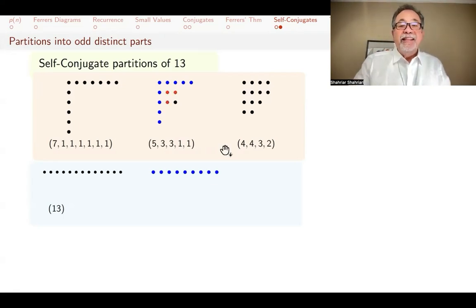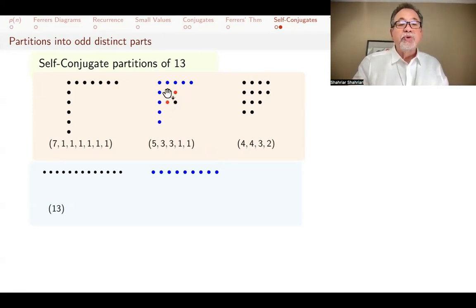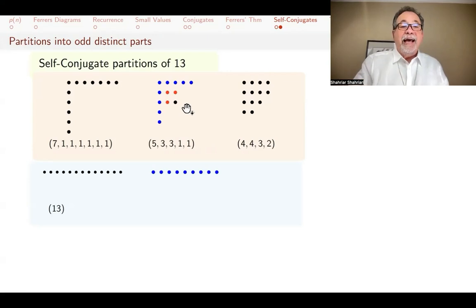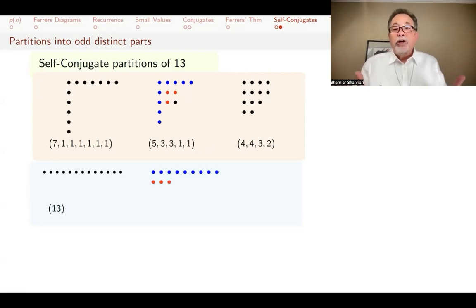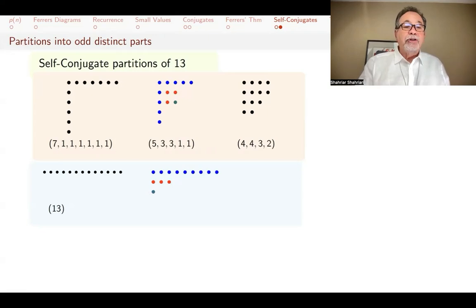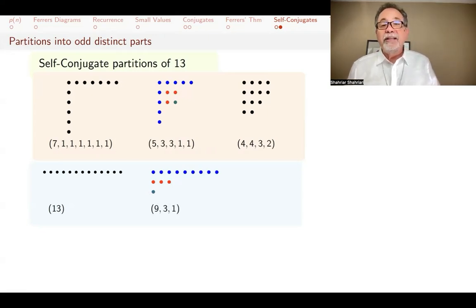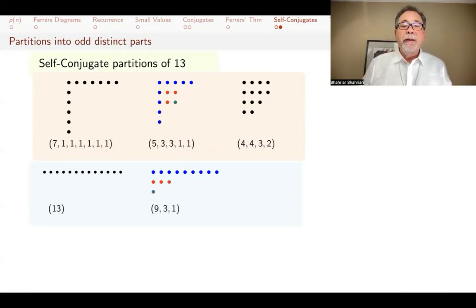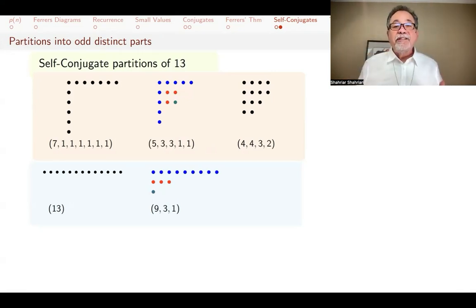So that's nine. Then take the next layer — the next upside-down L-shaped layer of red dots — and straighten that out. Again, for the same reasoning, you get an odd number smaller than the previous one: three things. Then you have that last single dot. So you get the partition 9, 3, 1 — again a partition of 13, but this time all parts are odd numbers. And because you go layer by layer inward, you always get distinct odd numbers.